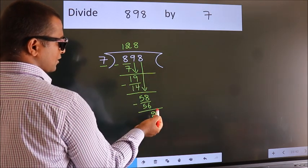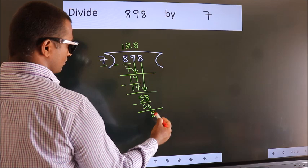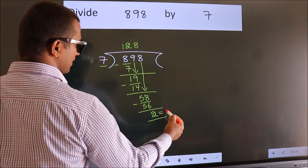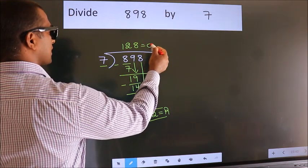No more numbers to bring down. So we stop here. This is our remainder. This is our quotient.